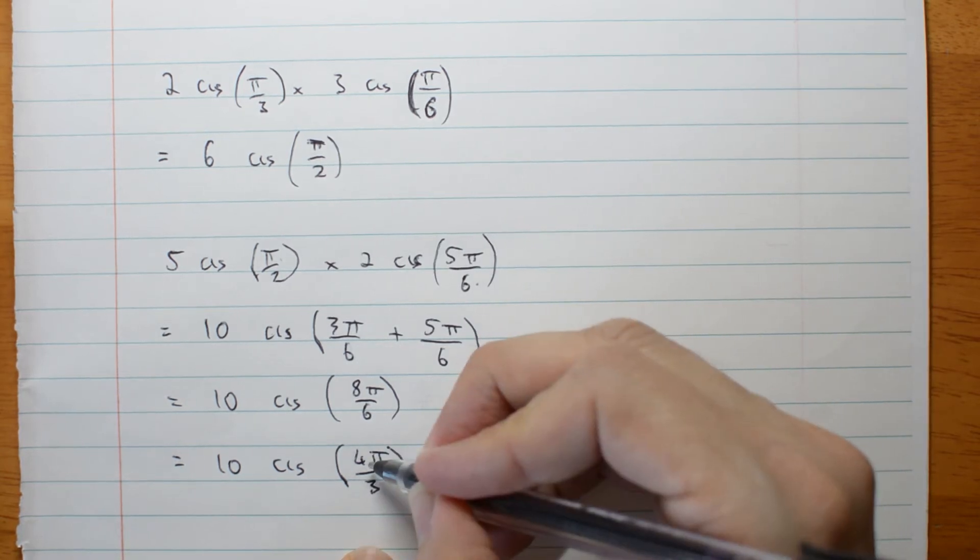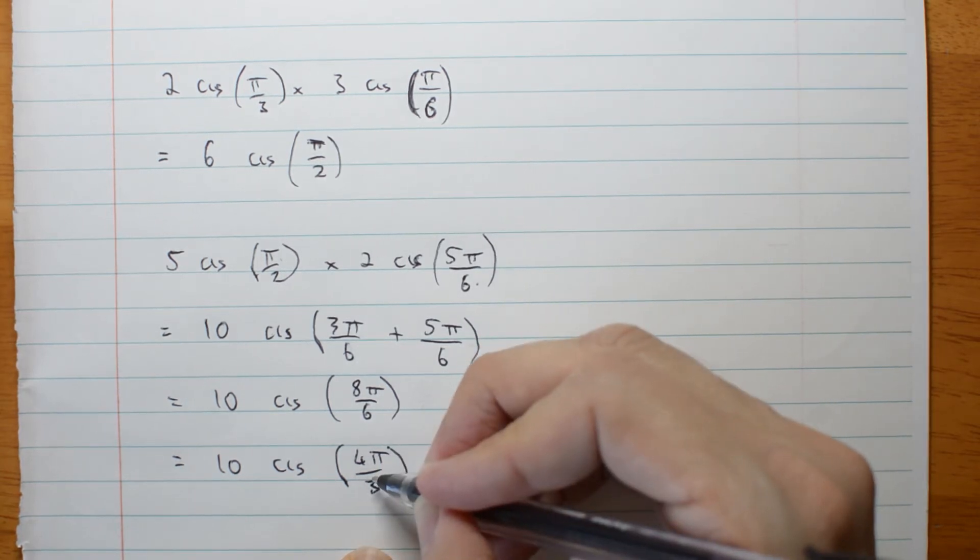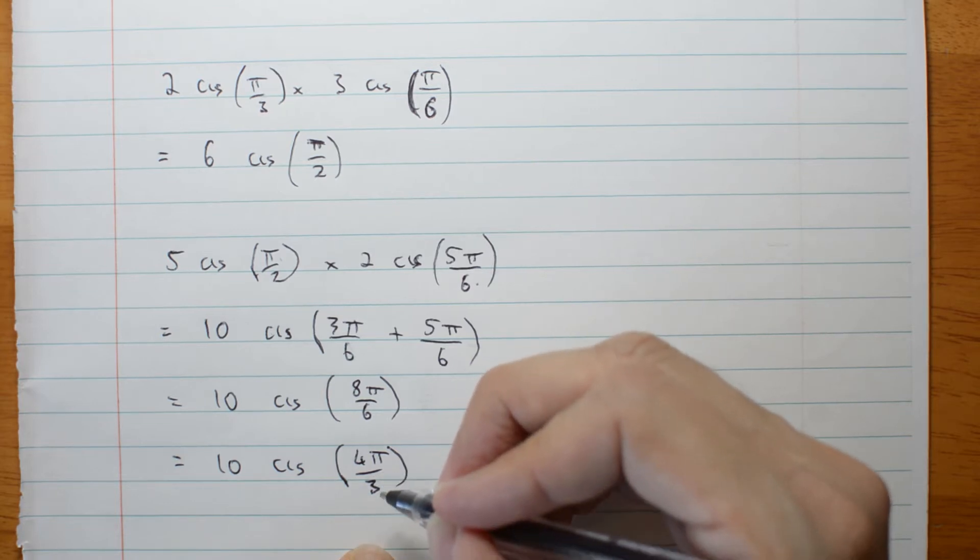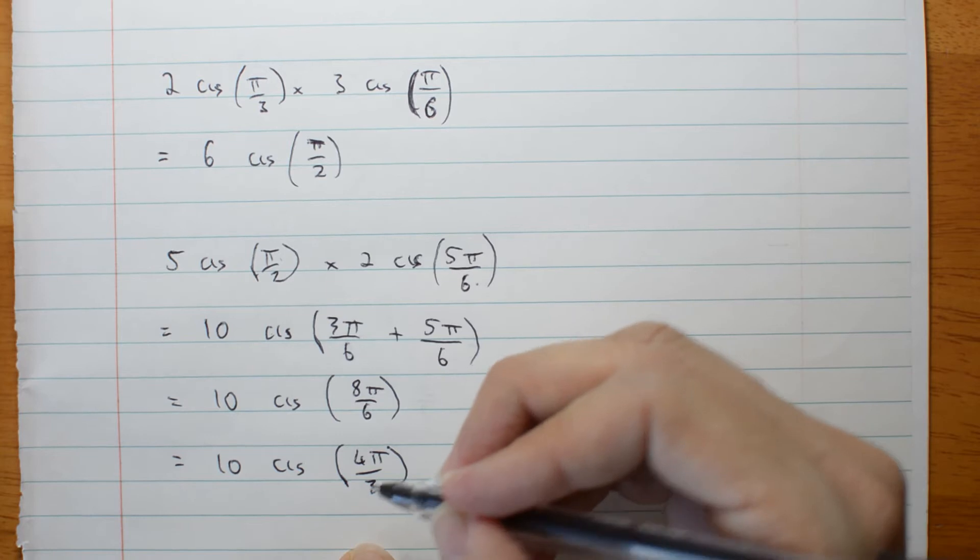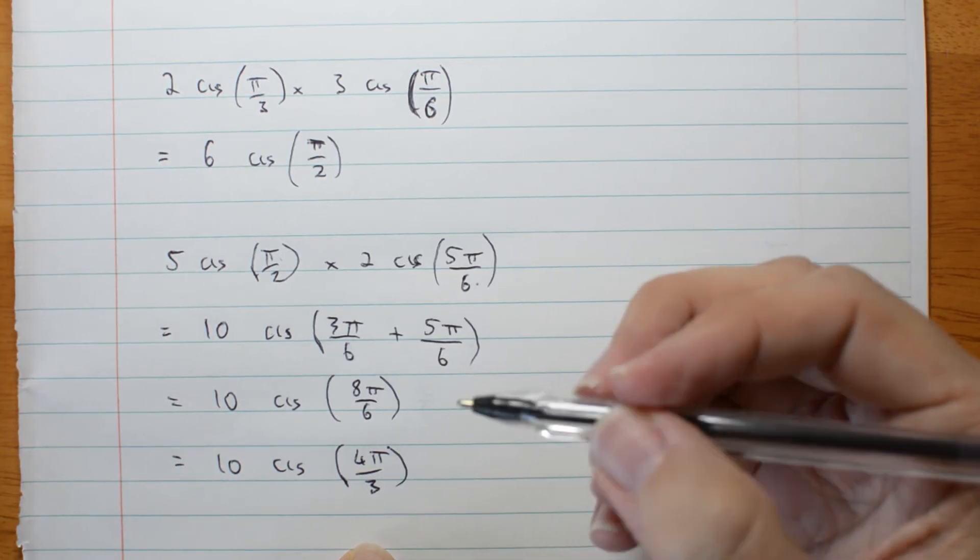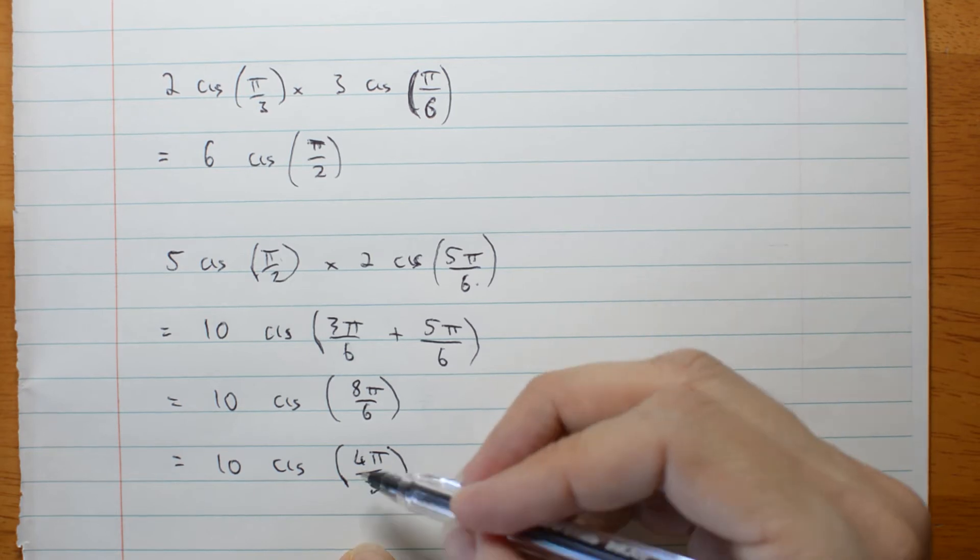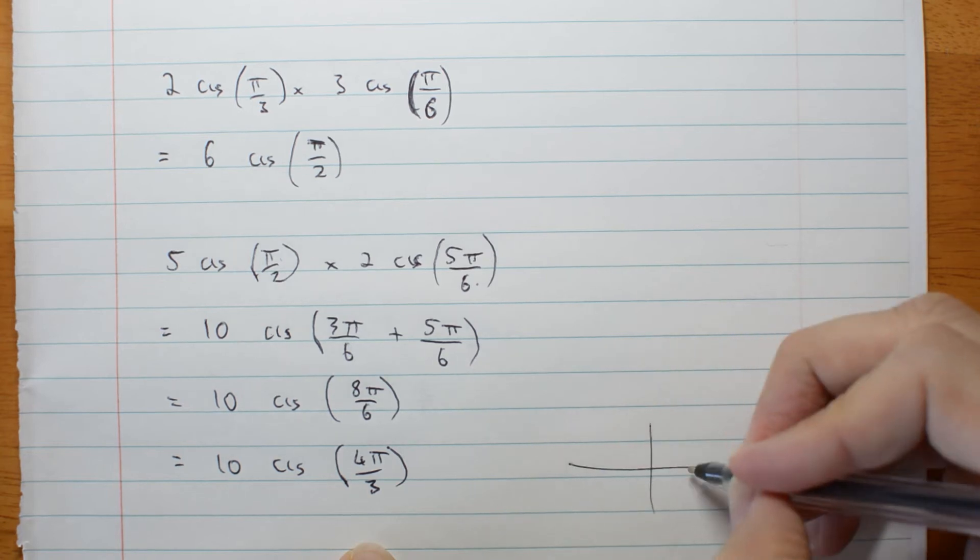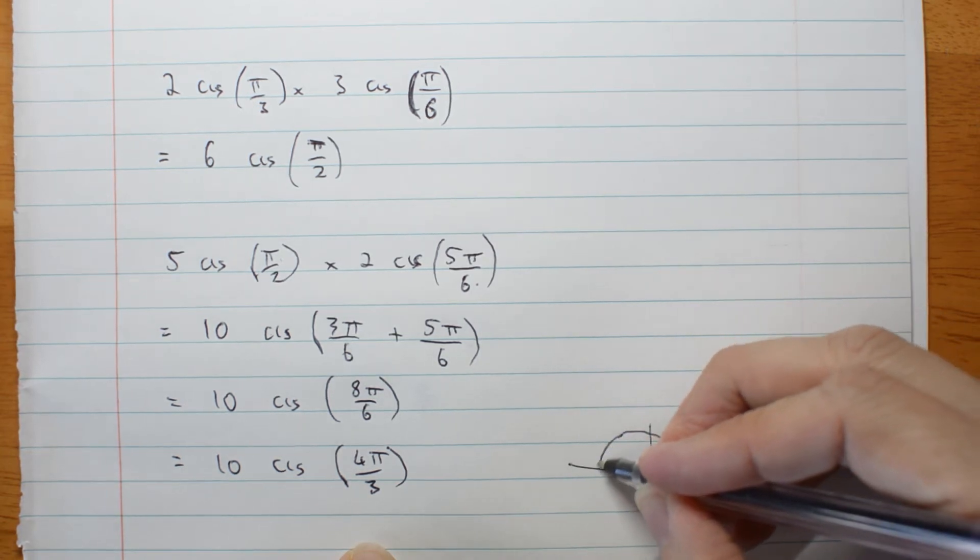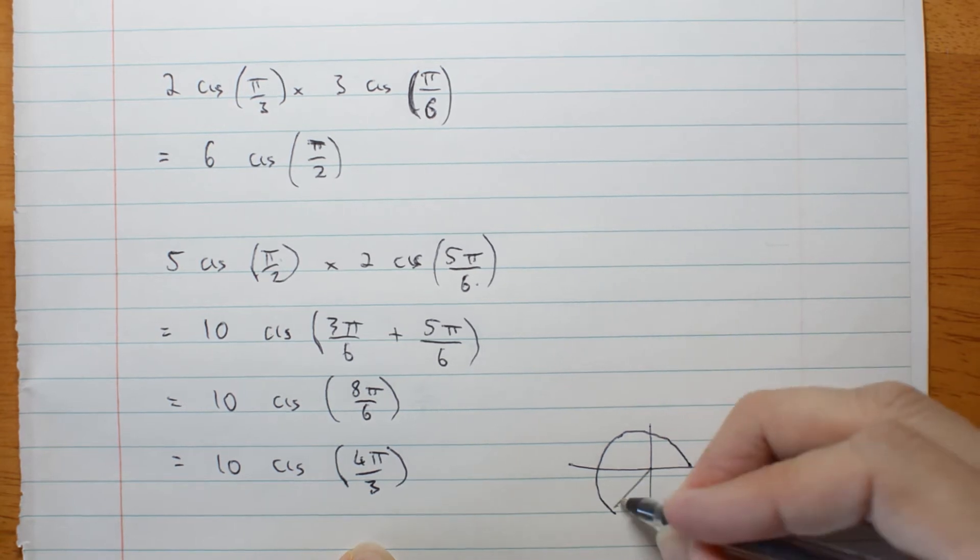4π/3 is bigger than π. And my principal argument, the one I give as my answer by convention, just like simplifying fractions, by convention I want to always give the principal argument between negative π and π. So 4π/3 has actually gone around 1π/3, 2π/3, 3π/3, 4π/3. It's actually down here.